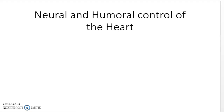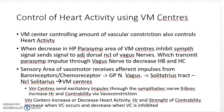Neural and humoral control of the heart. The controls of heart activity use the vasomotor centers. Neural control is mainly controlled by the vasomotor, the parasympathetic and the sympathetic nerve innervations, whereas humoral is a separate topic which will also be discussed.